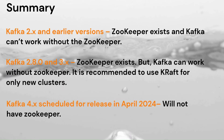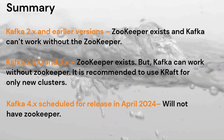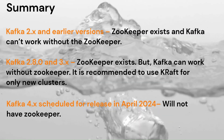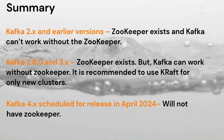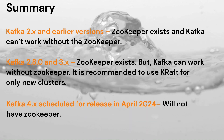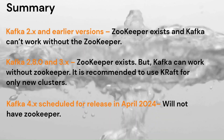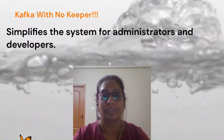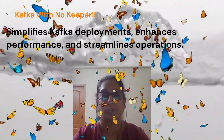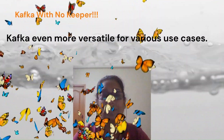To summarize: in Kafka 2.6 and earlier versions, ZooKeeper exists and Kafka cannot work without it. In Kafka 3.x versions, ZooKeeper exists but Kafka can work without it, though Kafka Raft is still recommended only for new clusters. Kafka 4.0, scheduled for release in April 2024, will not have ZooKeeper. Completely eliminating ZooKeeper simplifies Kafka for administrators and developers, improves performance, and streamlines operations, making Kafka even more versatile for various use cases.